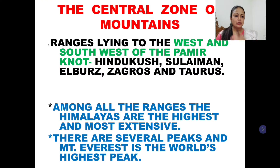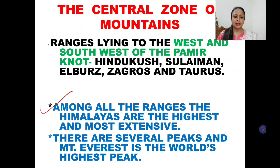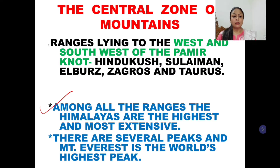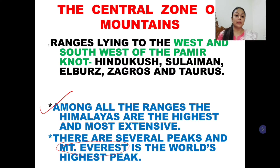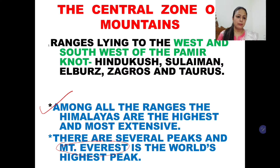We have already discussed the ranges lying to the east and west of the Pamir, including Zagros and Elbrus. Among all these ranges, the Himalayas are the highest. Mount Everest, located in the Himalayas, is the world's highest peak — a fact all of us are aware of.